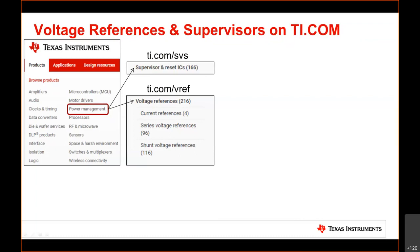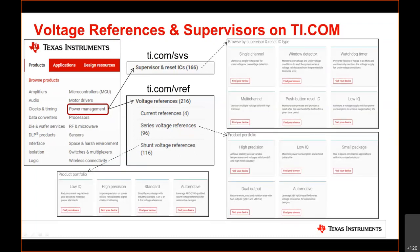Now, within these landing pages, you'll find how TI makes it easier for you to identify the correct type of product that you need, split by the very common and typical feature sets that customers often look for. So, on the supervisor side, we have six product categories that we mainly drive towards promotion. And they consist of the single channel, which is just one channel, under voltage only monitoring, or over voltage only monitoring. Your window detector, so that's under and over voltage. Your watchdog timers. Your multi-channel, so two, three, or four channels. Your push button reset IC's, as well as the low quiescent current types of devices.